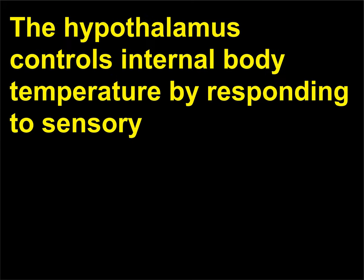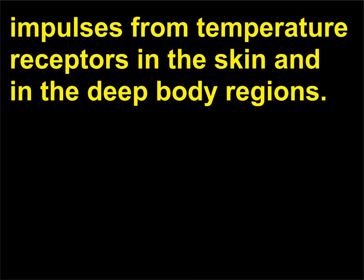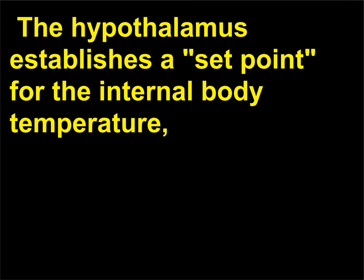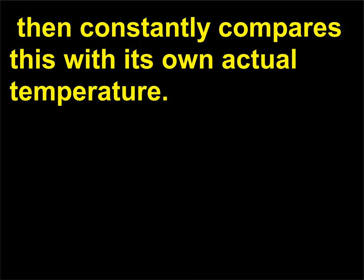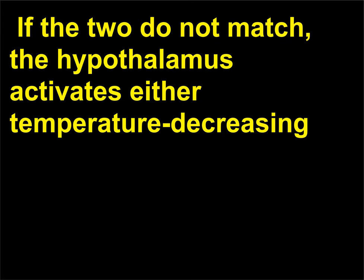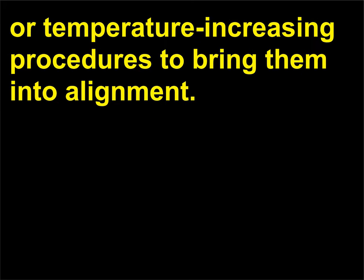The hypothalamus controls internal body temperature by responding to sensory impulses from temperature receptors in the skin and in the deep body regions. The hypothalamus establishes a set point for the internal body temperature, then constantly compares this with its own actual temperature. If the two do not match, the hypothalamus activates either temperature-decreasing or temperature-increasing procedures to bring them into alignment.